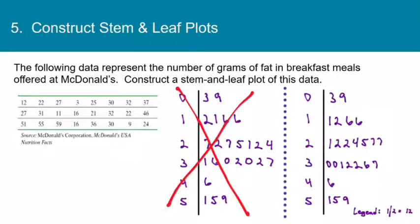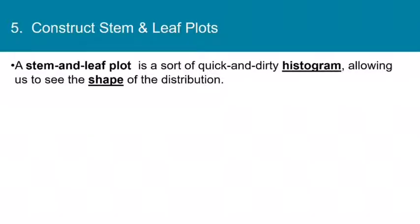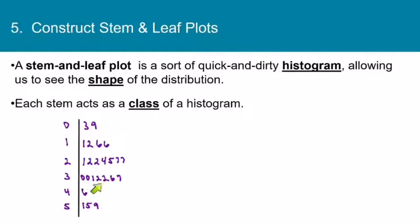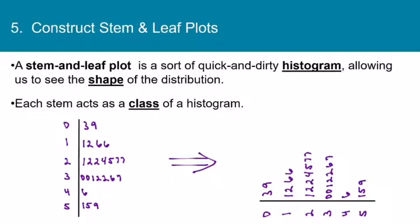So what does a stem and leaf plot do for us besides helping get data in order? A stem and leaf plot is a sort of quick-and-dirty histogram — it allows us to see the shape of the distribution. Each stem acts like a class of a histogram. If you turn the stem and leaf plot on its side, the shape goes up in the middle and back down. You can see that most of the values are concentrated in the 20s and 30s, while the single digits and 50s have fewer values.